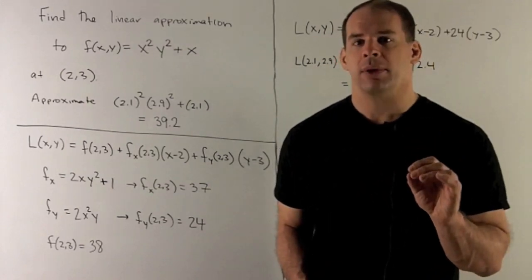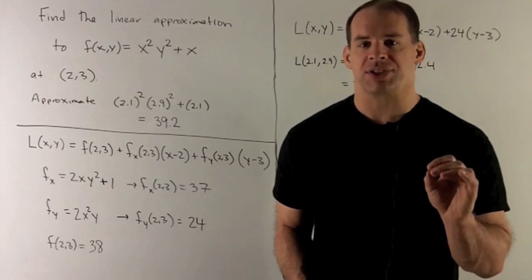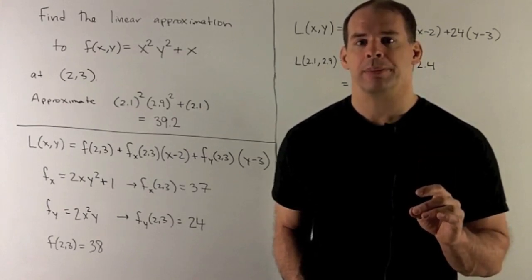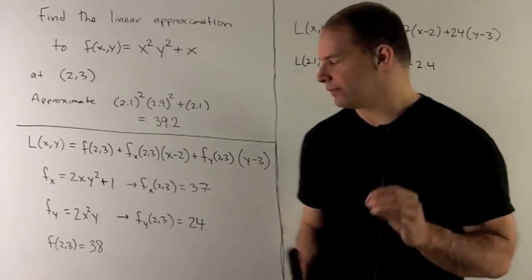Partial with respect to y, we treat y as our variable, x is constant. So I'm going to get 2yx². Put in (2, 3), what comes out is 24.